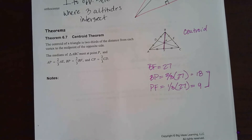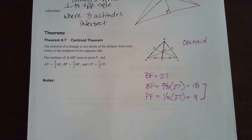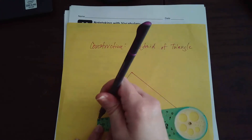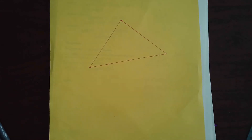Before we move on to the orthocenter, let's do a construction of a centroid. Grab a sheet of paper and draw a triangle — it doesn't matter what kind. To construct a centroid, we need to construct medians, which means finding the midpoint of each side. We'll use compass-and-straightedge construction, not just a ruler.